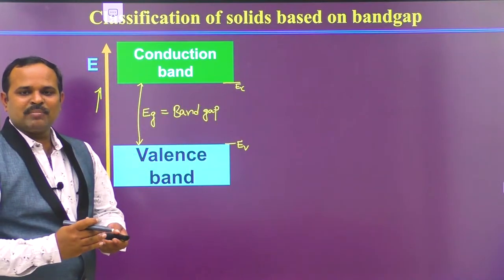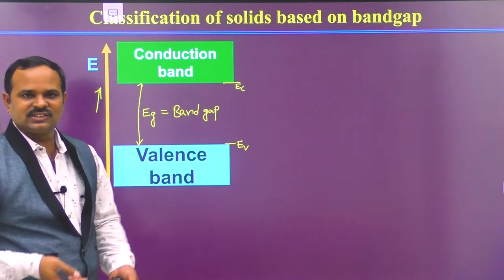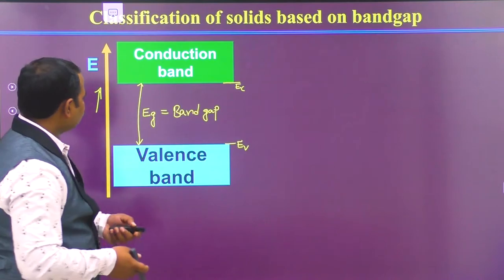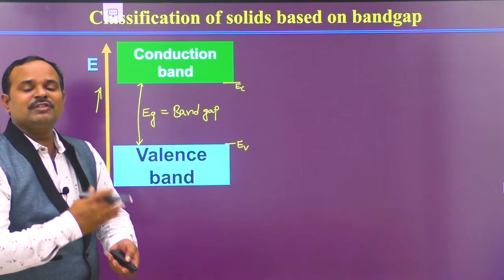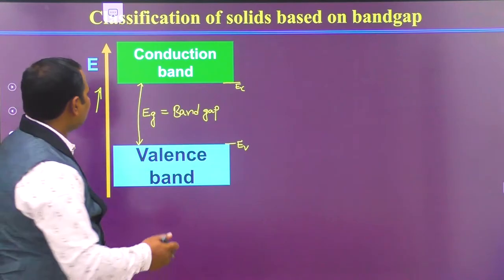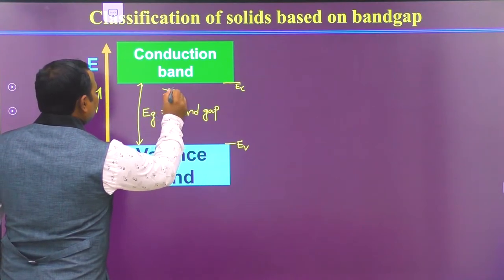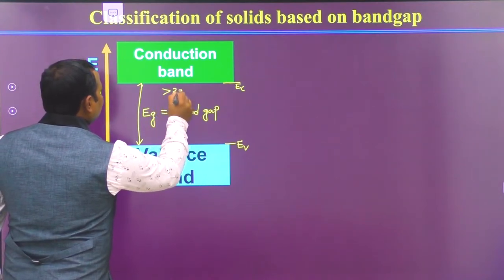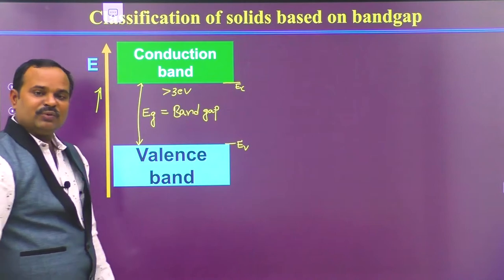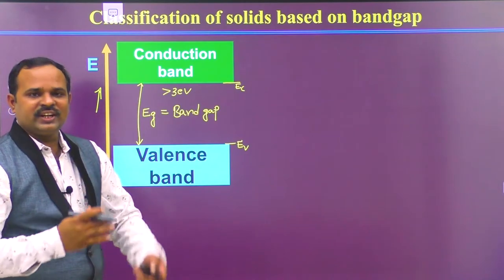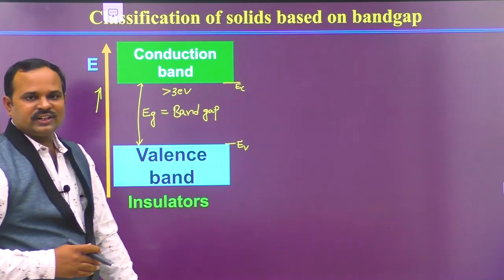Based on the band gap, we can differentiate materials. If for some material the band gap is of the order of greater than 3 electron volts, then we can say they are insulators.